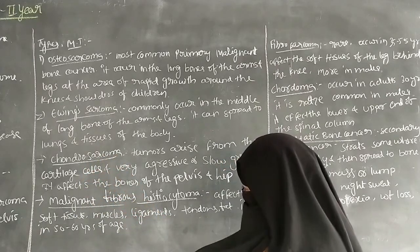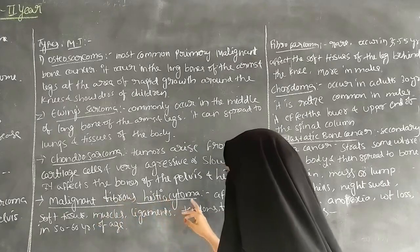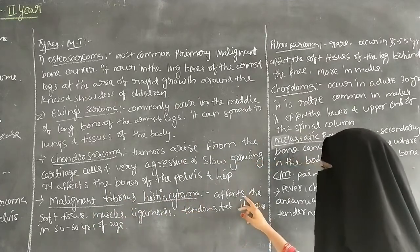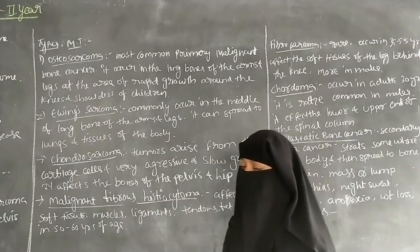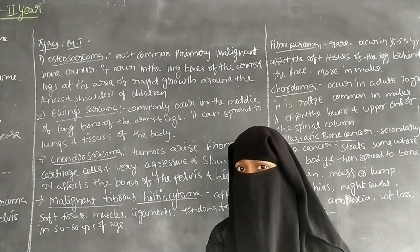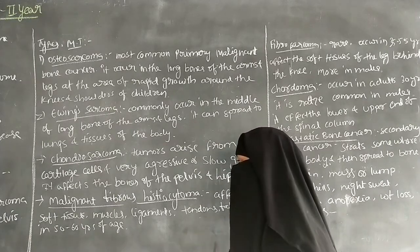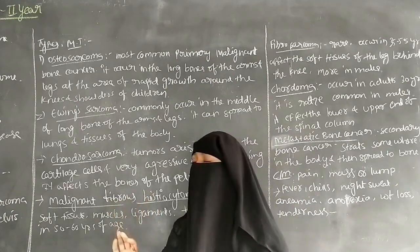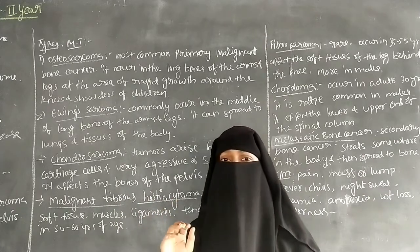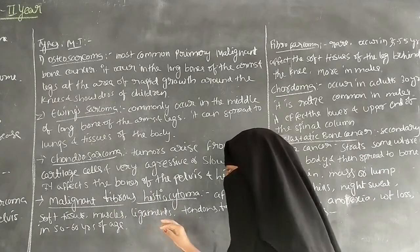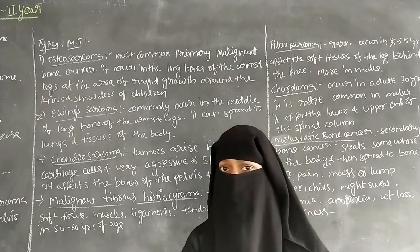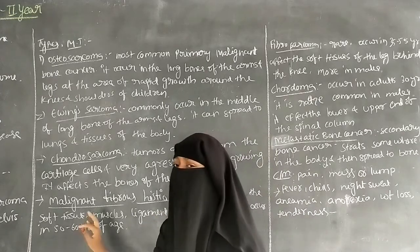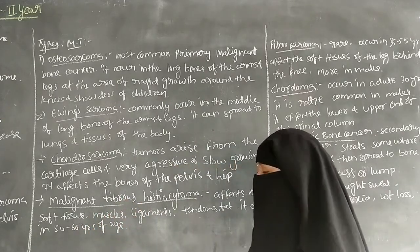The next type is malignant fibrous histiocytoma. It affects the soft tissues, ligaments, tendons, and muscles, and mostly occurs in the age group of 50 to 60 years.